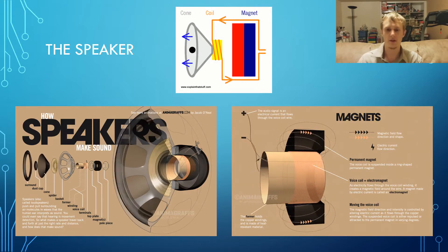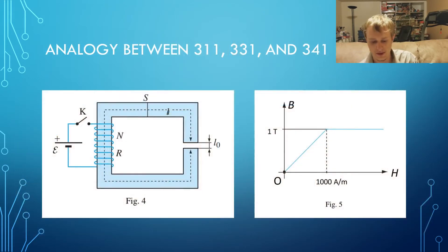Now let's look briefly at how we can apply the concepts used in ECE 311 and 331 to ECE 341. We are going to be looking at this non-linear magnetic circuit with an HB curve like in figure five. To apply concepts used in 311 and 331, we will convert this magnetic circuit into an electric circuit, and we will use an IV curve to solve for the operating region of the magnetic circuit.